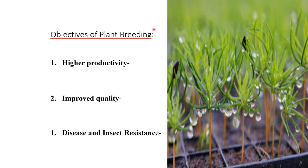The objectives of plant breeding: first, higher productivity — increasing yield has been the ultimate aim of the plant breeder, achieved by developing more efficient genotypes with greater physiological efficiency. Second, improved quality — improved quality of agricultural products contributes greatly to human well-being.